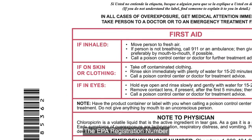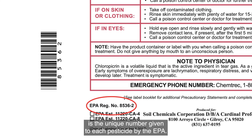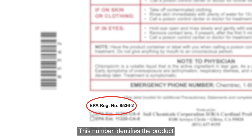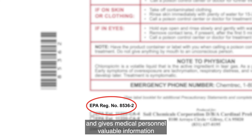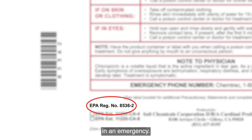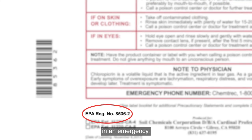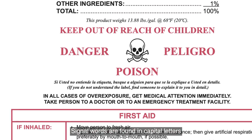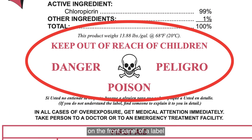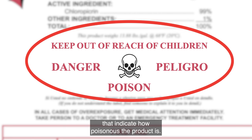The EPA registration number is the unique number given to each pesticide by the EPA. This number identifies the product and gives medical personnel valuable information in an emergency. Signal words are found in capital letters on the front panel of a label that indicate how poisonous the product is.